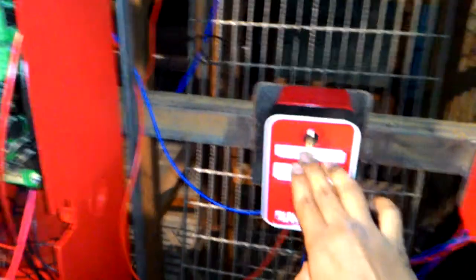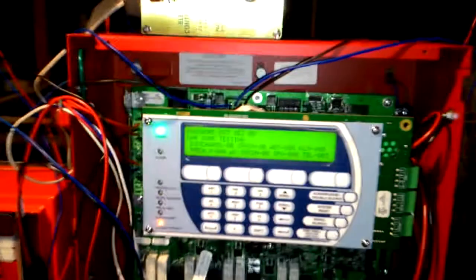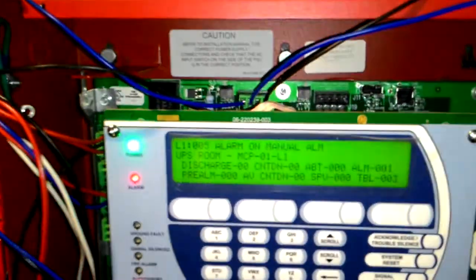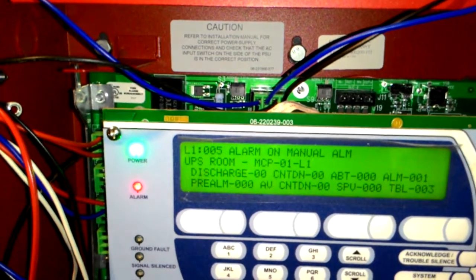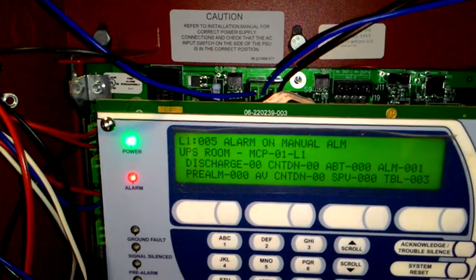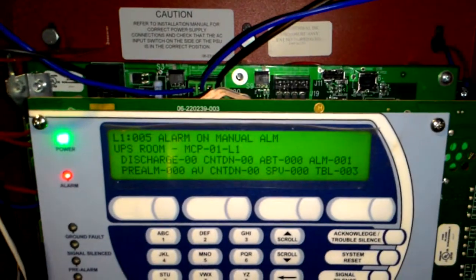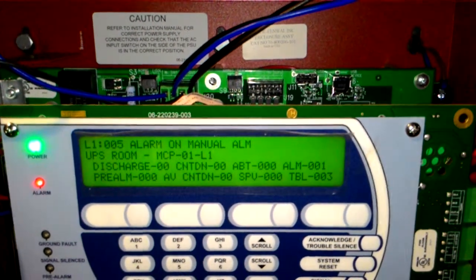As you can see the manual alarm is activated. That is nothing but the fifth address on loop one and it is in UPS room. And you can see that there is an alarm.